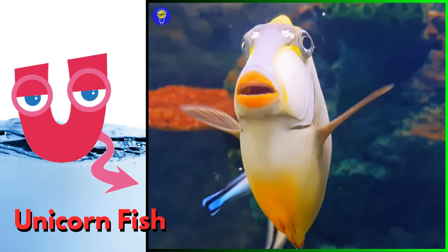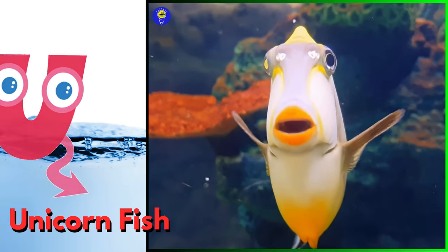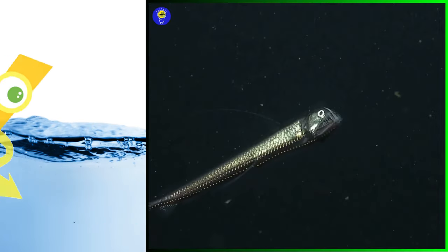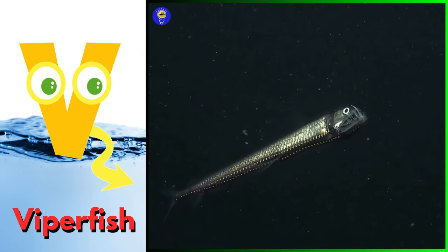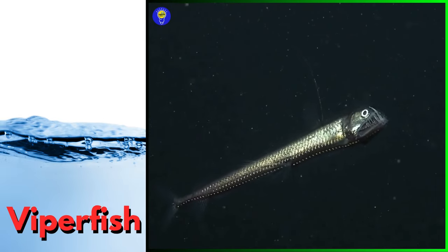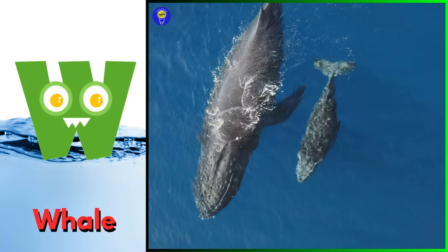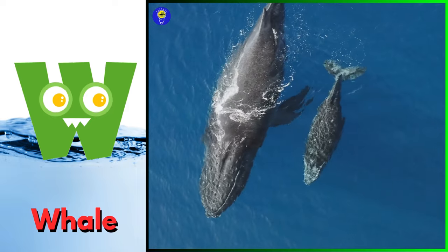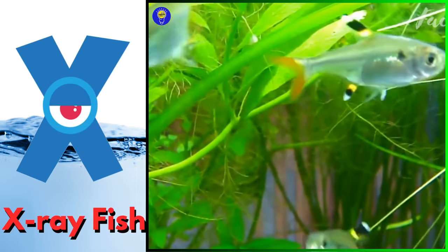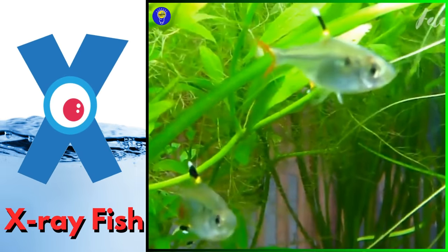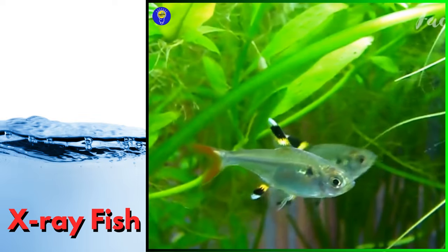U is for unicornfish, uh uh, unicornfish. V is for viperfish, v v, viperfish. W is for whale, w w, whale. X is for x-ray fish, z z, x-ray fish.